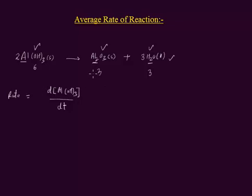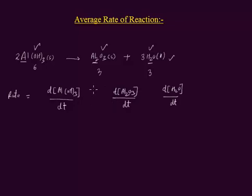Similarly, we can write for the products also. Product is Aluminum oxide: D[Al₂O₃] divided by dT. And for water molecule: D[H₂O] divided by dT. When a reaction takes place, the concentration of reactant decreases, and the decrease in concentration of a reactant is represented by a negative symbol — that is why I put a negative symbol here. At the same time, the concentration of product increases, and the increase in concentration of product is represented by a positive symbol.